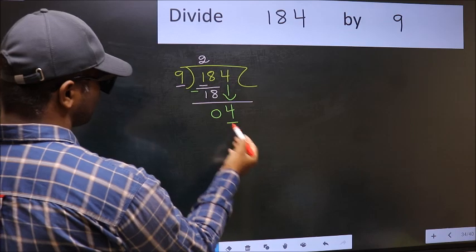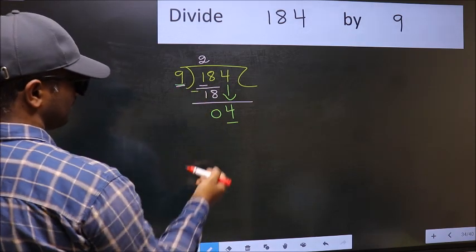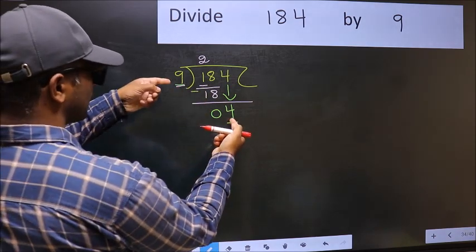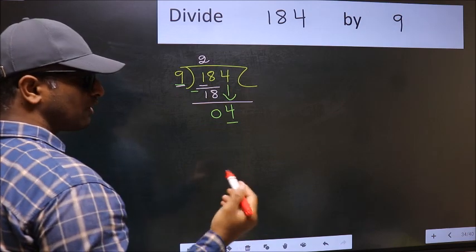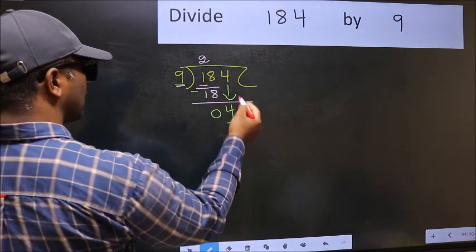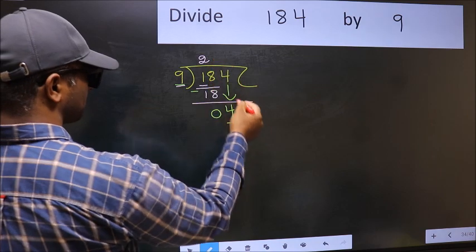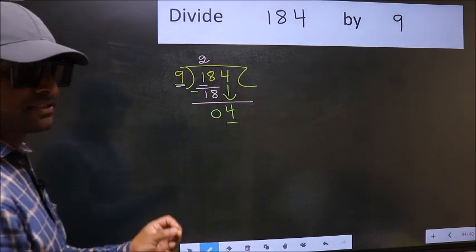Here we have 4 and here 9. 4 is smaller than 9. So what many do is, they directly put dot and take 0. Which is wrong.